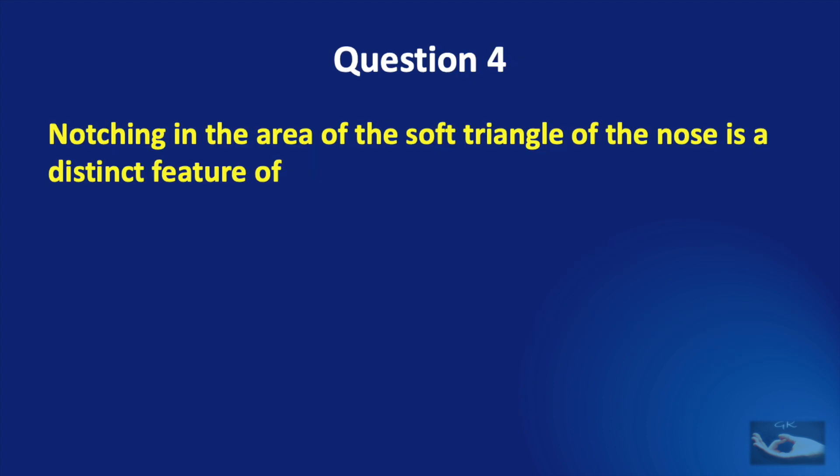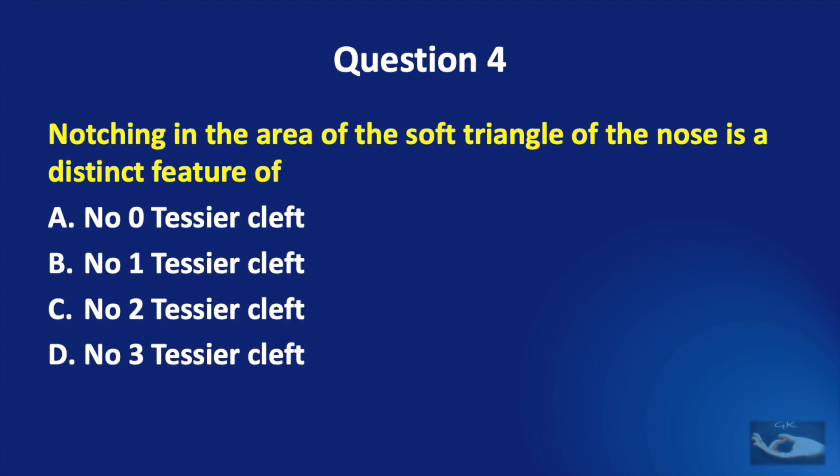Question No. 4. Notching in the area of the soft triangle of the nose is a distinct feature of No. 0 Tessier cleft, No. 1 Tessier cleft, No. 2 Tessier cleft, or No. 3 Tessier cleft?